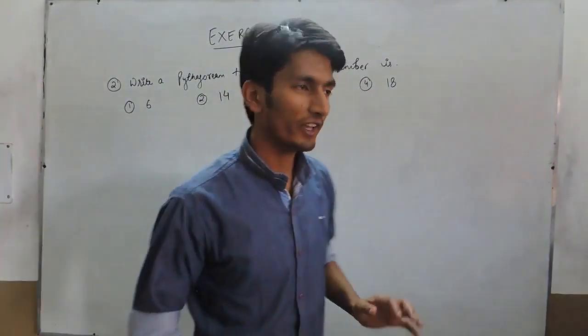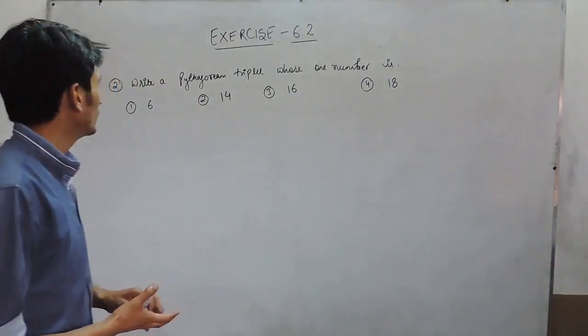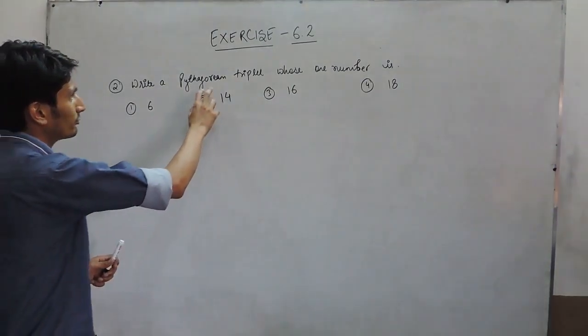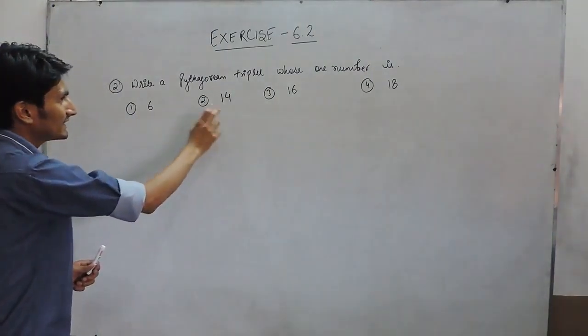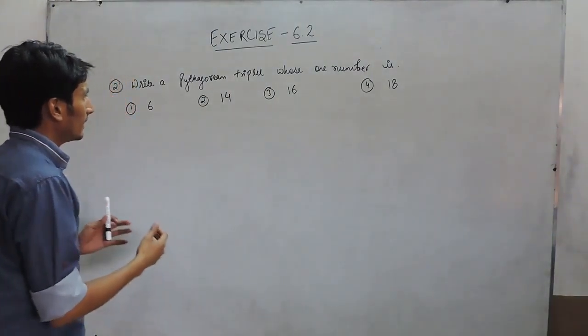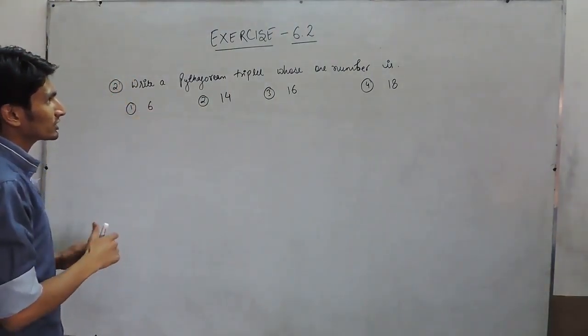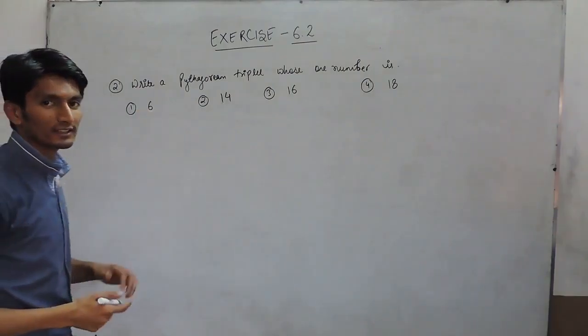Hello everyone, in this video we are going to solve question number 2. In question number 2, you have to find the Pythagorean triplet of these numbers, or you can say one of the Pythagorean triplet is 6, you have to find the other 2.